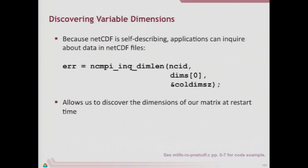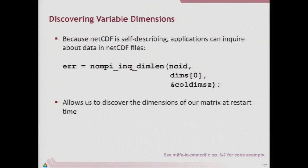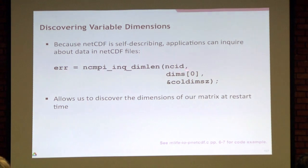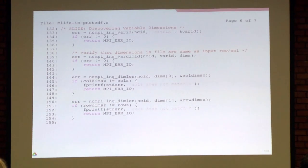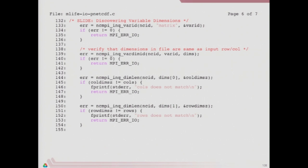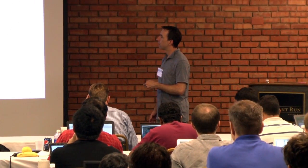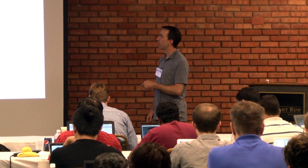What we can do in this case is: given a dimension reference, ask for the length of that dimension. I can check to see if the number of columns I expect is the number of columns in the variable. First thing we query is a variable identifier — in restart, we believe there's a matrix variable in this file. We call a function that says I think there's a matrix variable in this dataset; please give me back a reference to it. We get that reference in var_id.